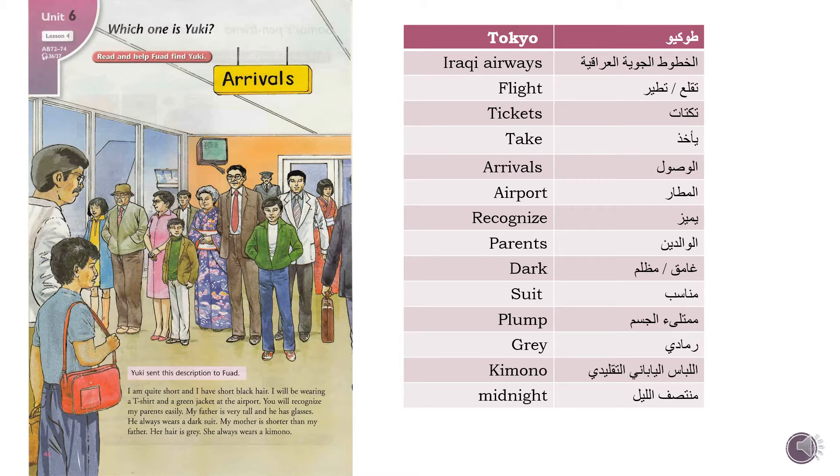Fouad and his father were going to Tokyo, and they arrived at Tokyo airport. Fouad is looking for Yuki and his family. You can find Yuki and his family in the picture. Give Fouad the description of Yuki and his father, so they can find Yuki. Let's read the description of him and help Fouad find Yuki.